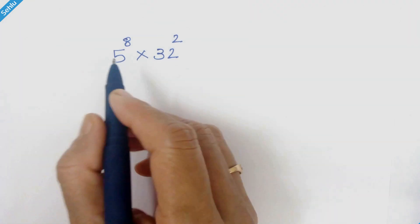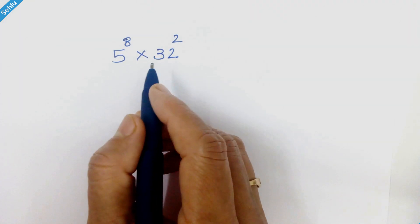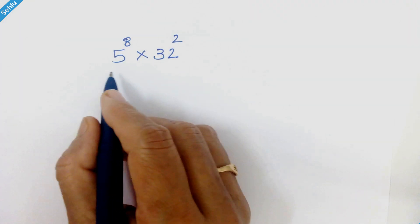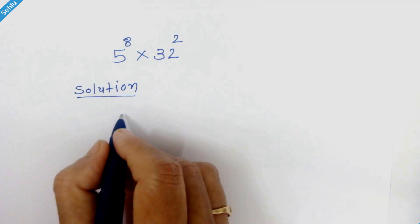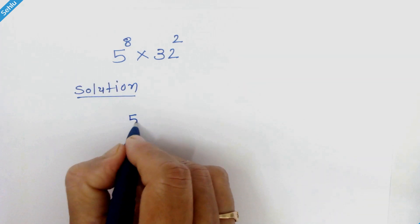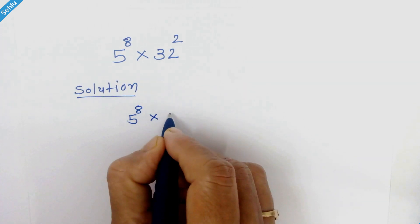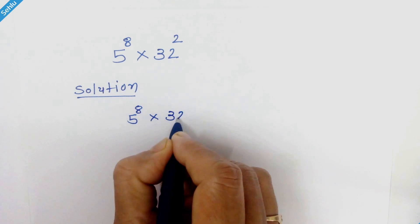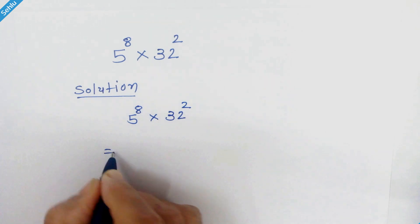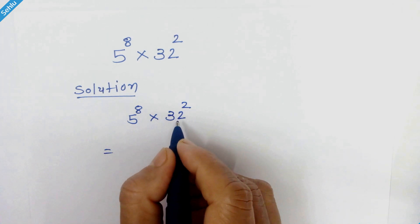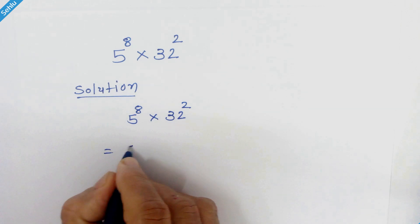Hello friends, I am back with another math problem. Let's solve this. So here we have 5 raised to 8 times 32 square. Now 32 can be written as 2 raised to 5.